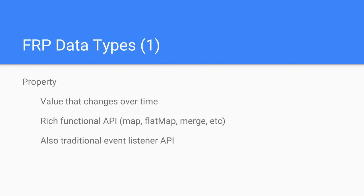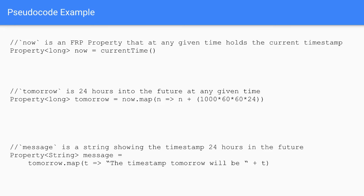When asked how 'now' stays current: a lot of FRP libraries, including the one I use, don't have a way to synchronously ask for the value. All you can do is compose new properties from it, and then ultimately put an event listener on the one where you need to interact with non-FRP code. So you could call 'message.onValue', and then every millisecond you'd get a new message that's the string with the right number in it.